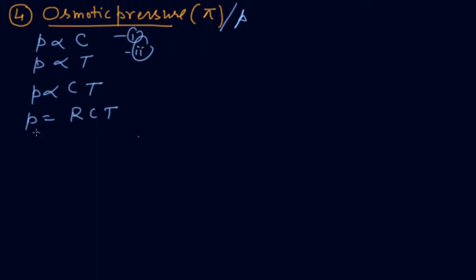We can write p = CRT. Since concentration C equals number of moles per liter of solution, p = (n/V)RT. We can also write this as pV = nRT.